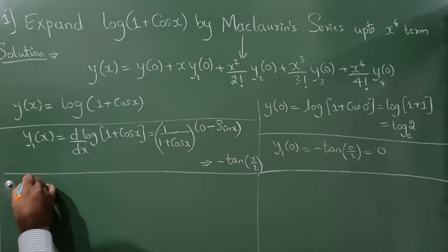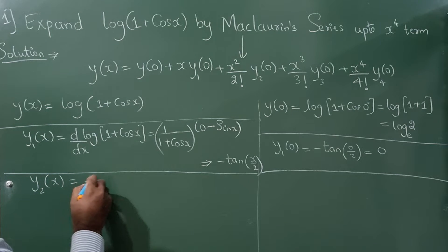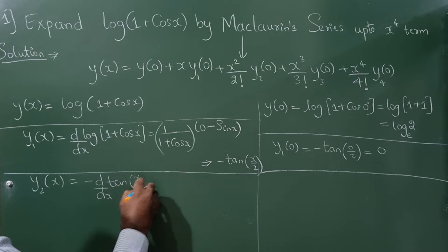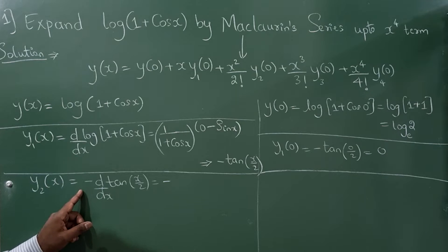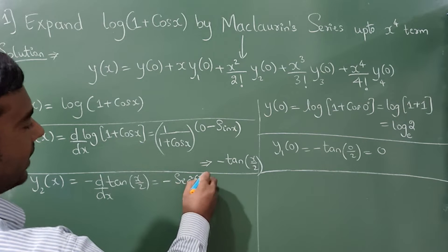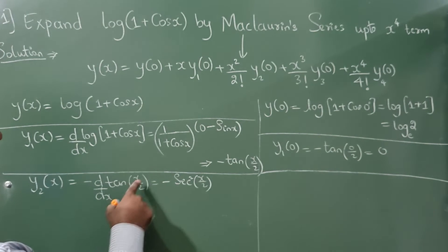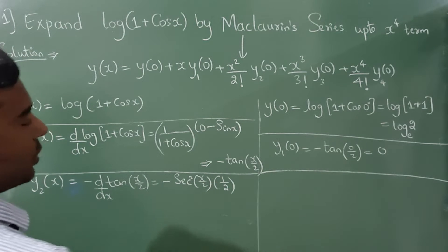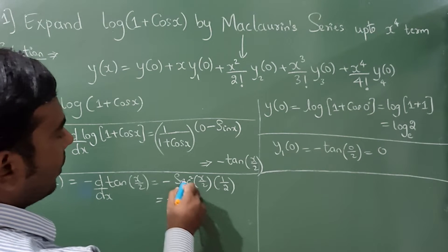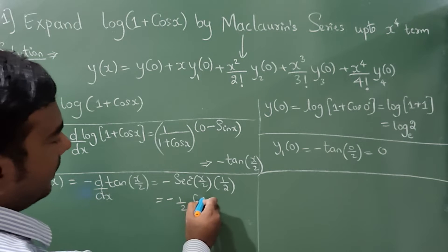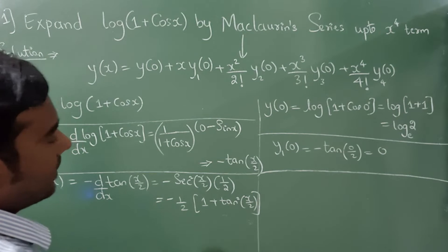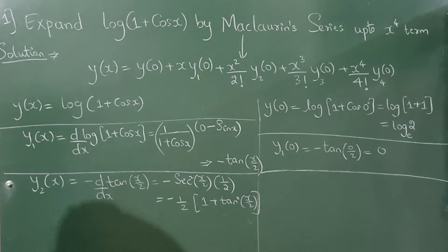Next, find y₂(x) by differentiating y₁(x) = −tan(x/2). Using d/dx[tan x] = sec²x and the chain rule, d/dx of x/2 gives 1/2. So y₂(x) = −(1/2)·sec²(x/2), which can be written as −(1/2)·(1 + tan²(x/2)).